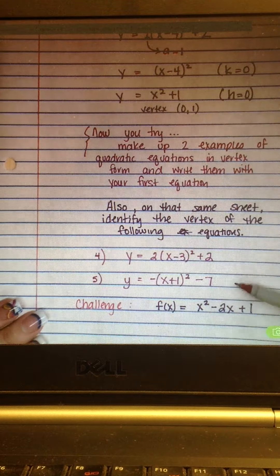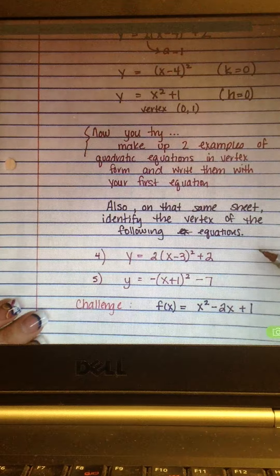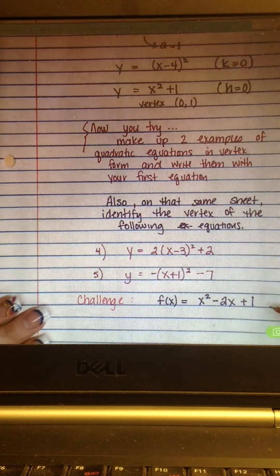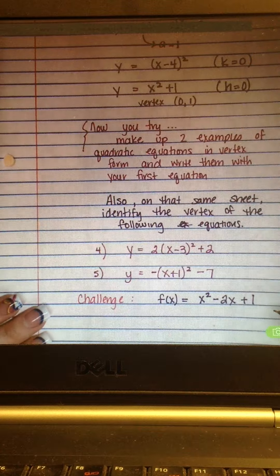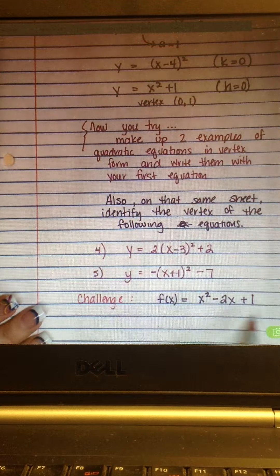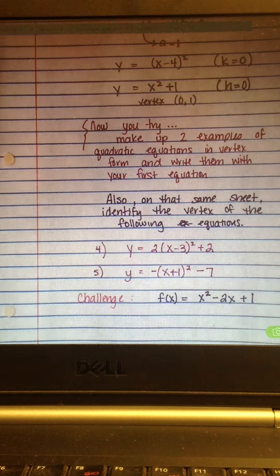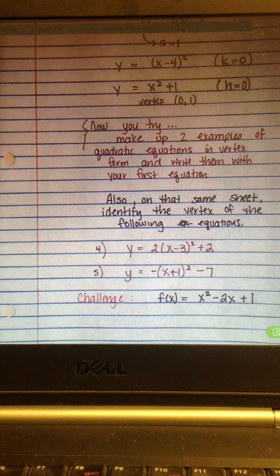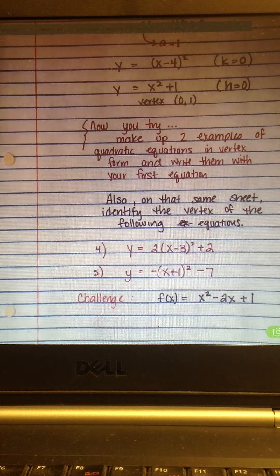So, this would be numbers 4 and 5. I want you to identify the vertex of each of these problems here. And then I want to give you a challenge. This is not in vertex form, but there is a way to figure out what the vertex is. I want to see if you can remember how to do that. So, this is your challenge problem there and it's where the other five problems are just due tomorrow. Your challenge problem could get you some tickets if you can come up with the right answer for that one.